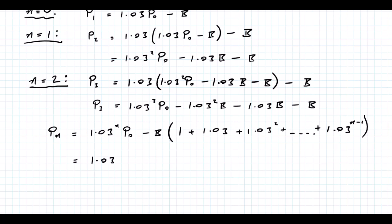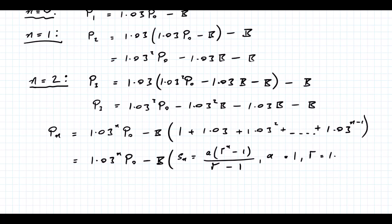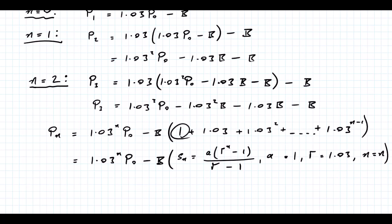We have 1.03 to the power of n times P0, minus B times a geometric series. We'll use Sn = A times (R to the power of n minus 1) over (R minus 1), since R is bigger than 1. Here A = 1, the common ratio R = 1.03, and the number of terms is n — we have n minus 1 terms plus one extra, bringing us to n.